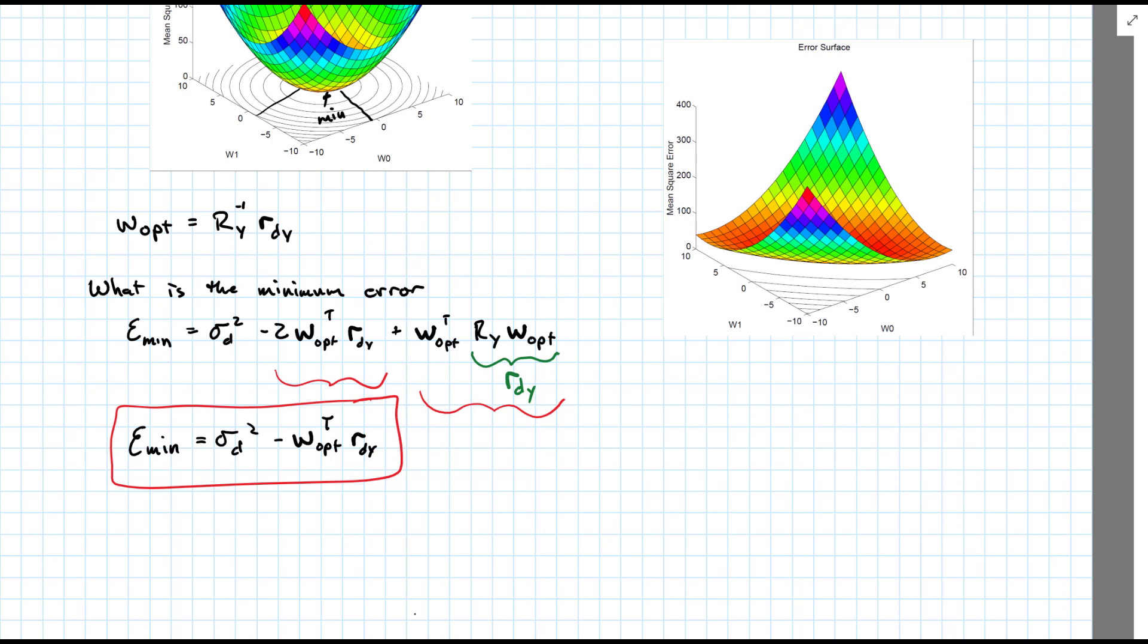and y, our input, is going to have a big impact on how well we can do. If they were completely uncorrelated and zero mean, then r_dy would be zero. And this would tell us that our minimum error is going to be just the variance of the quantity we were trying to estimate.